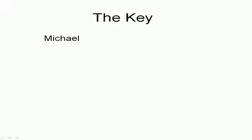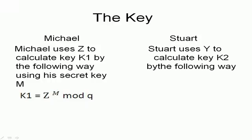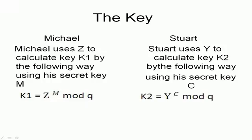Now, the key. Michael has got Stuart's Z, so he calculates his key K1 by using the formula which will be shown right now. He uses his previously selected secret key M. This is the formula. He has Z, M, and Q, so he finds out K1. Similarly, Stuart uses Y which was sent by Michael to calculate his key K2 using his secret key C. He gets K2 equal to Y raised to C mod Q.